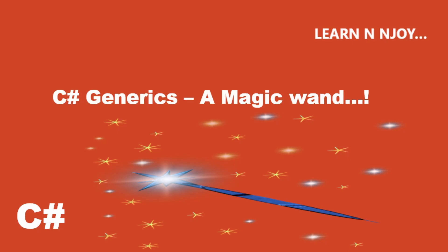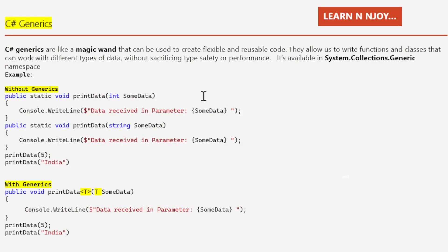Let's get started. C# generics are like a magic band that can be used to create flexible and reusable code. They allow us to write functions and classes that can work with different types of data without sacrificing type safety or performance. It's available in the System.Collections.Generic namespace.